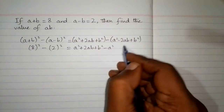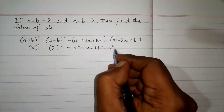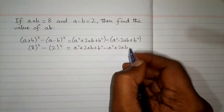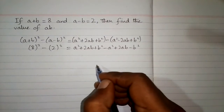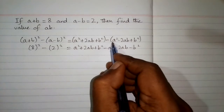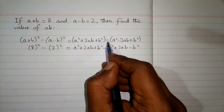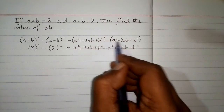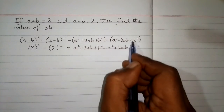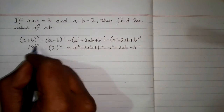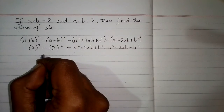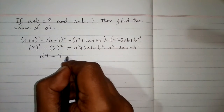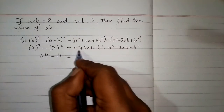When we remove the bracket, all signs of the terms change: plus a squared becomes minus a squared, minus 2ab becomes plus 2ab, and plus b squared becomes minus b squared, because multiplying by the minus sign changes all signs. Now, 8 squared is 64 and 2 squared is 4.